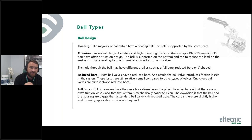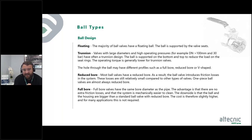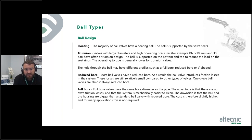A full bore ball valve has the same bore diameter as the pipe. So if you've got a 15mm or half-inch pipe, the internal diameter of the ball matches the pipe exactly. The advantage is there are no friction losses and the system is mechanically easier to clean. The downside is that the ball and housing are slightly bigger, making the cost slightly higher. However, there is a big benefit in terms of flow through the system and reducing head loss.